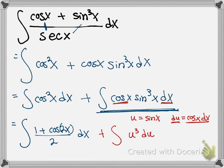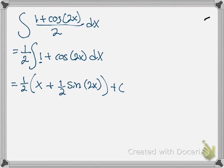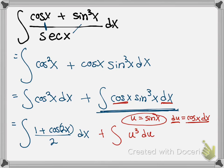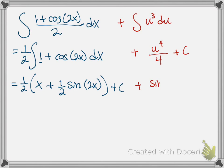This becomes the integral of u cubed du. The integral of u cubed is u to the fourth over 4. Since u was sine of x, this becomes sine to the fourth of x over 4. Adding the two integrals together, the final answer has only one plus c — you don't need it for both pieces.